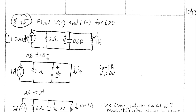At t equals zero minus, just before the added five amps comes out of the current source, we have a one amp source and a two ohm resistor. The capacitor behaves like an open circuit and the inductor behaves like a short. Since the inductor is shorted, there is no voltage drop across any of the branches, so V₀ equals zero volts. All of the current from the source goes through the shorted branch, so I₀ equals one amp.